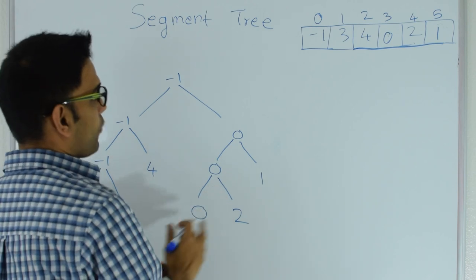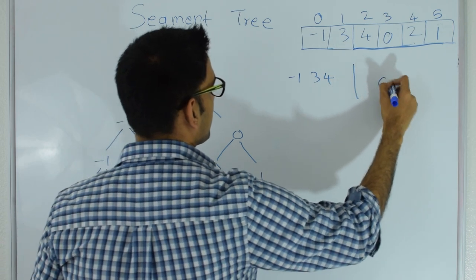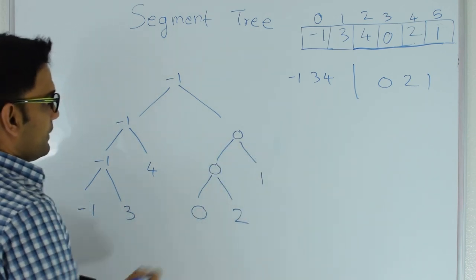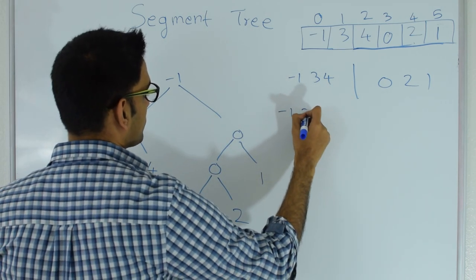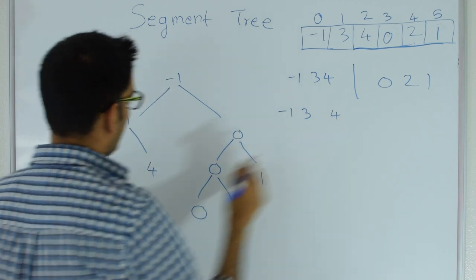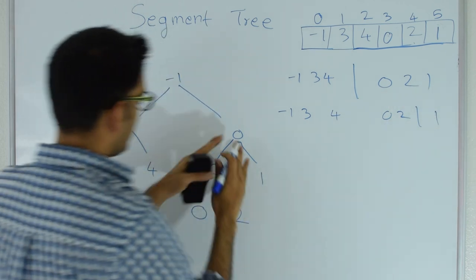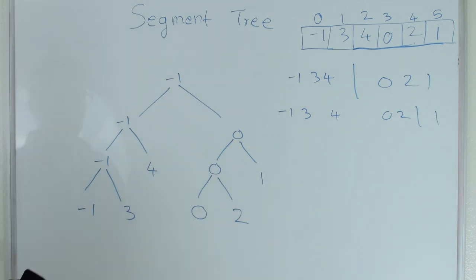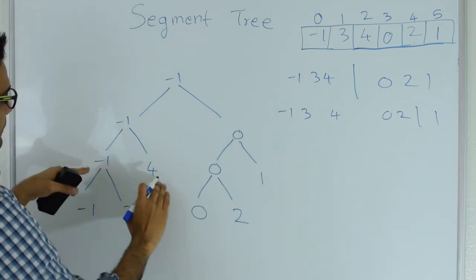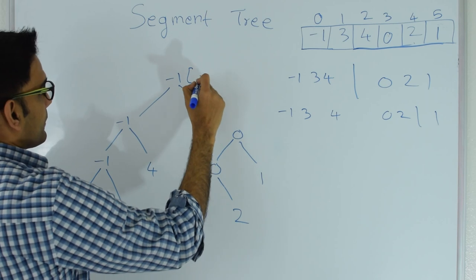How did I create this tree? I split the array into two halves: minus 1, 3, 4 on one side and 0, 2, 1 on the other side. I again split each half: minus 1 and 3 on the left, and 4 as the only element remaining on the right. Similarly on the other side, 0 and 2 go together and 1 is at a level above them. When this leaf setup is complete, I find the minimum of each pair all the way to the top. So minus 1 is the minimum of the entire range.